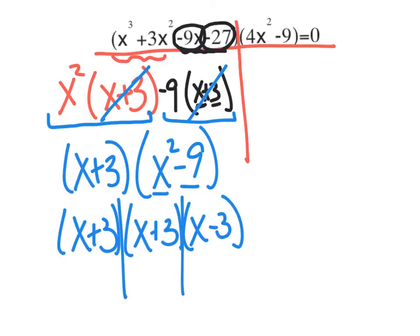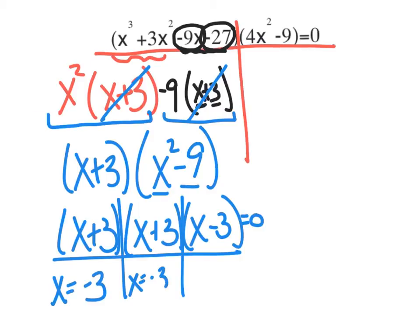Setting each factor equal to zero: x = -3, x = -3, and x = 3. So x = -3 has a multiplicity of 2 — I could write that as (x + 3)² times (x - 3).